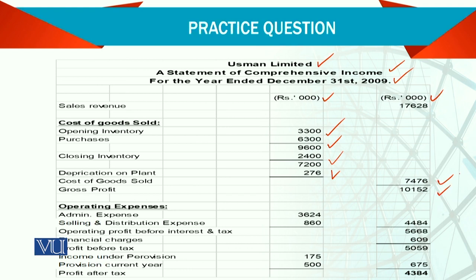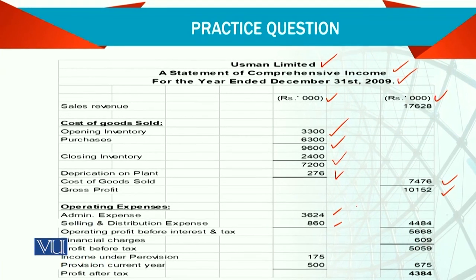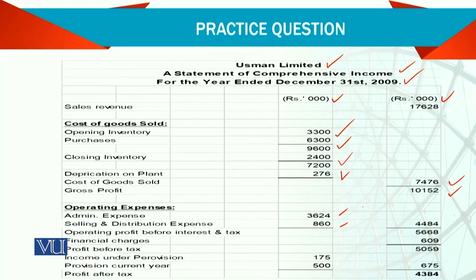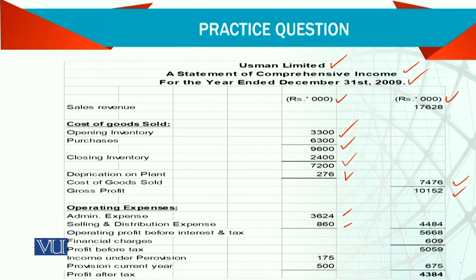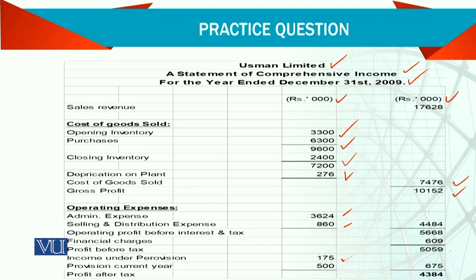Out of gross profit, we have administrative expense and selling and distribution — there is a detailed working of how those are calculated. Then we have financial charges given, so we need to reduce financial charges out of the gross profit.